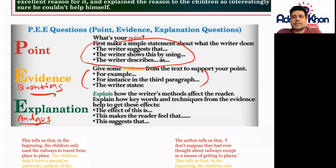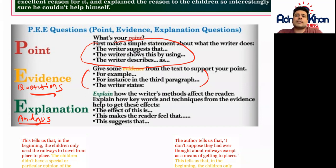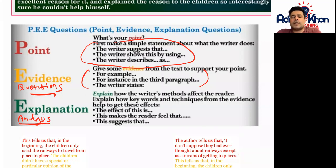Here you explain how the writer's methods affect the reader — how does this actually affect you as a reader? Explain how the keywords and techniques from the evidence help to create this particular effect. Once you have the evidence, you need to go into much more detail and explain the effects on the reader: how it makes the reader feel, and what it shows in terms of the story. Explanation and Analysis is all about going into depth, looking at the effects of the techniques being used by the writer.